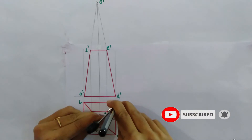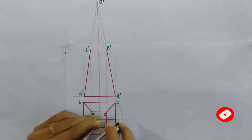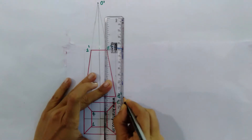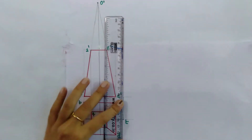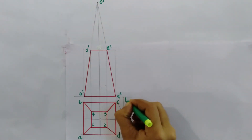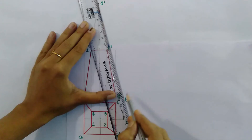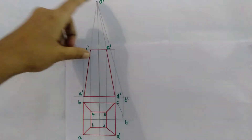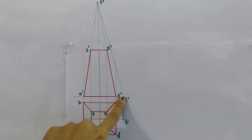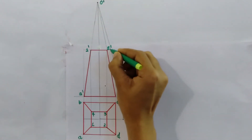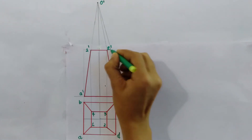Draw an arc cut to find point T. Mark it as small letter T. Draw a vertical line as the axis line, and join point T' to complete the construction.